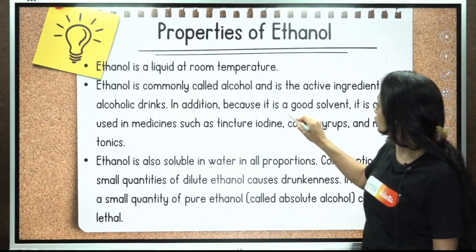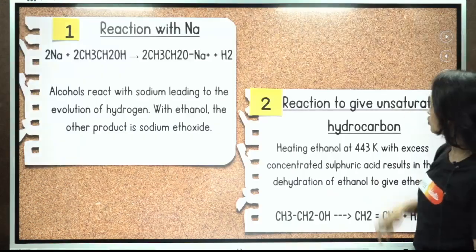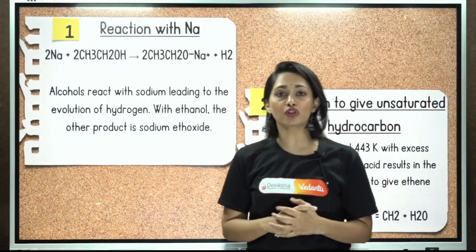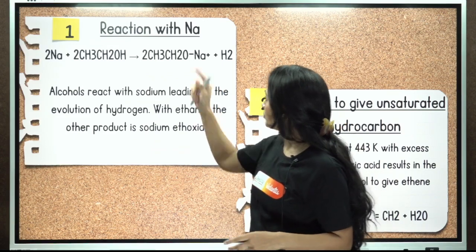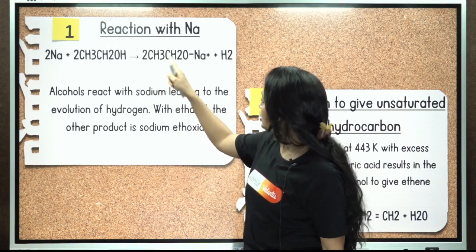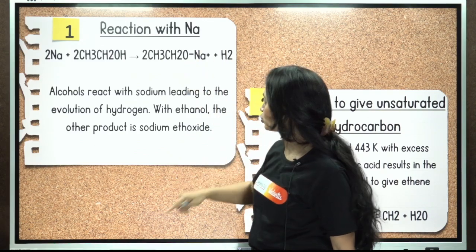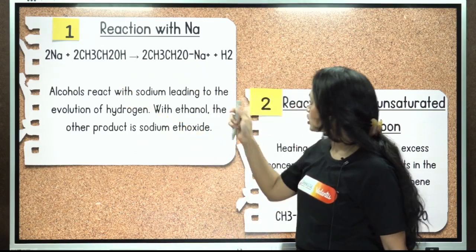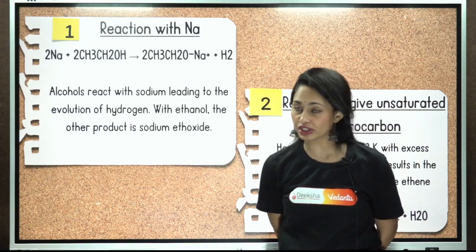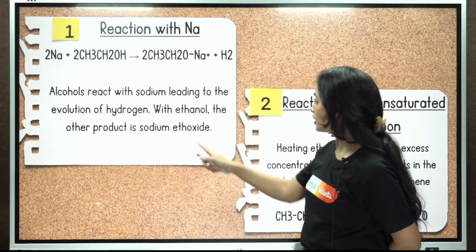Moving on to the chemical properties of ethanol — this is one of the most commonly asked questions. Reaction with sodium: sodium reacts with ethanol to form sodium ethoxide, CH3CH2ONa, plus H2 gas. Alcohols react with sodium leading to the evolution of hydrogen gas, and the other product is sodium ethoxide.